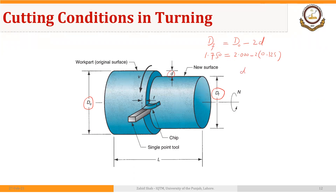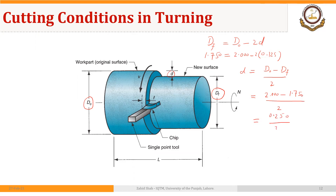In other words, the depth of cut equals the original diameter minus the final diameter, divided by 2. In this case, that is 2.00 minus 1.75, divided by 2, which equals 0.250 divided by 2, giving 0.125.